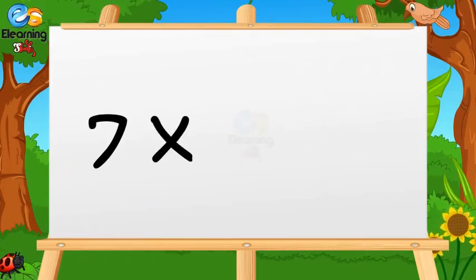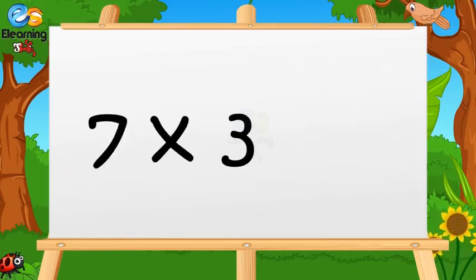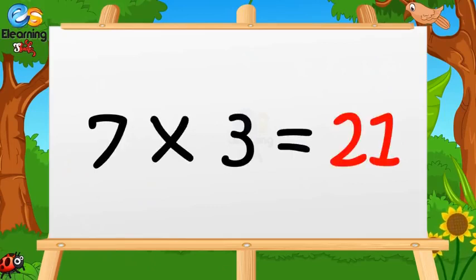Seven twos are fourteen. Seven threes are twenty-one.